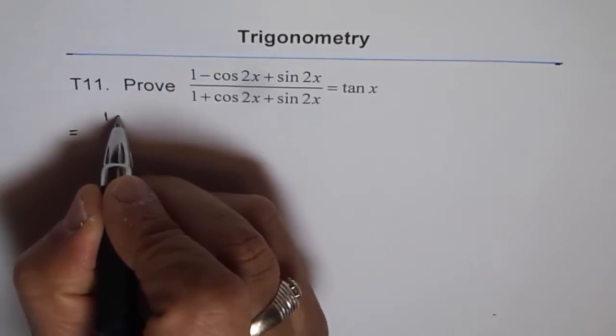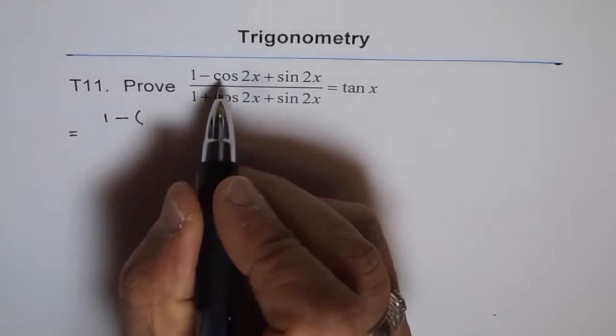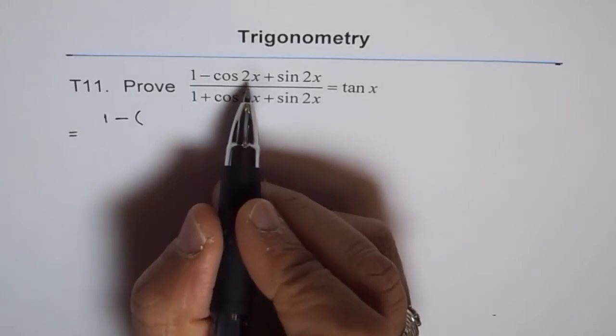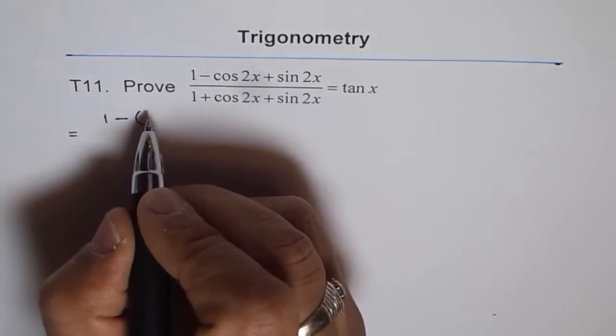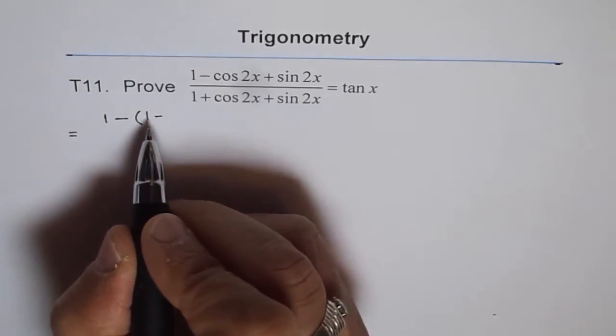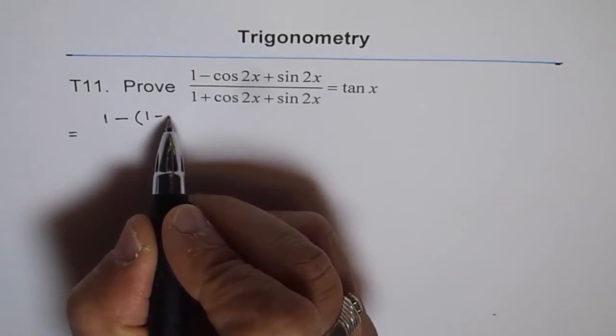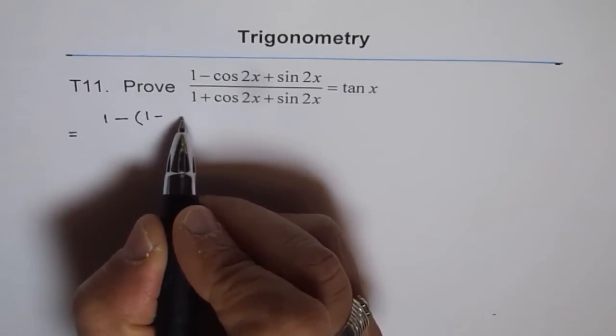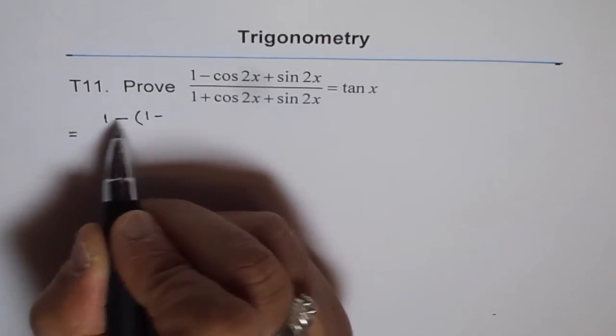So we already have 1 here minus. So now we will write cos 2x in terms of, if I write 1 minus 2 sin square x, in that case 1 and 1 will cancel out. Do you see that?